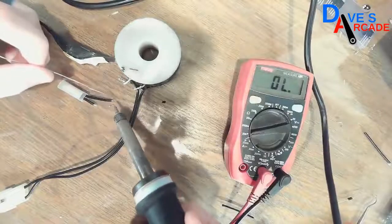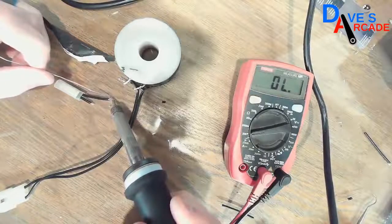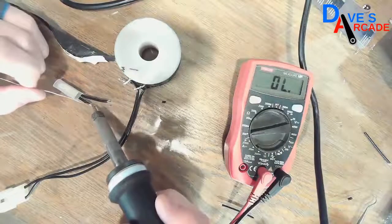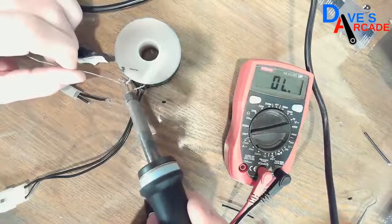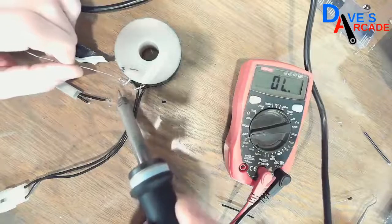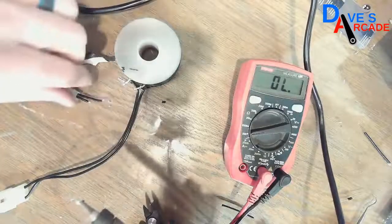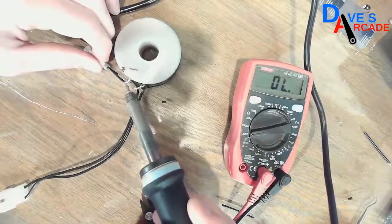I always like to add a little fresh solder to the tips of the wire before I try to solder them together. Do this on both sides. Now you can solder them together.